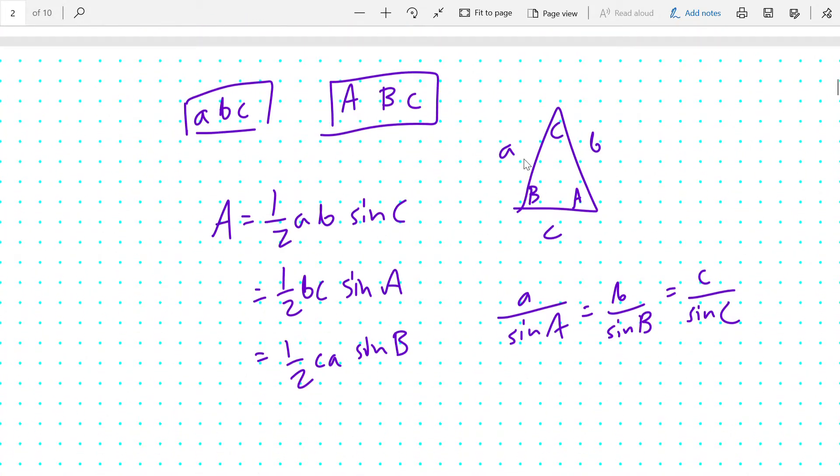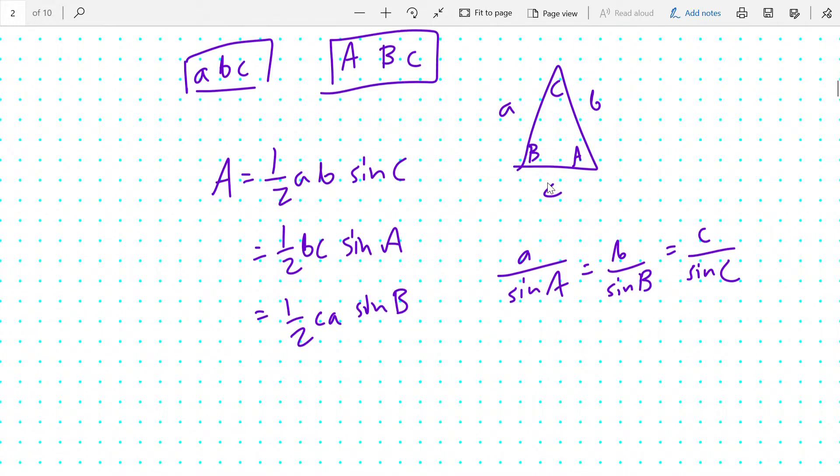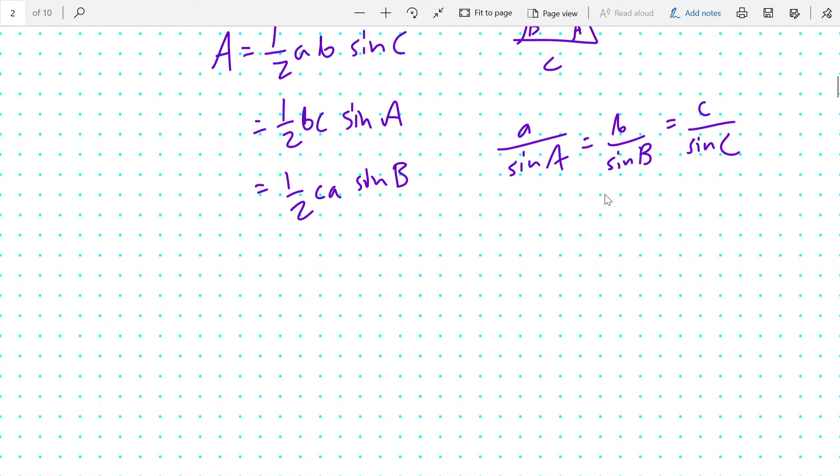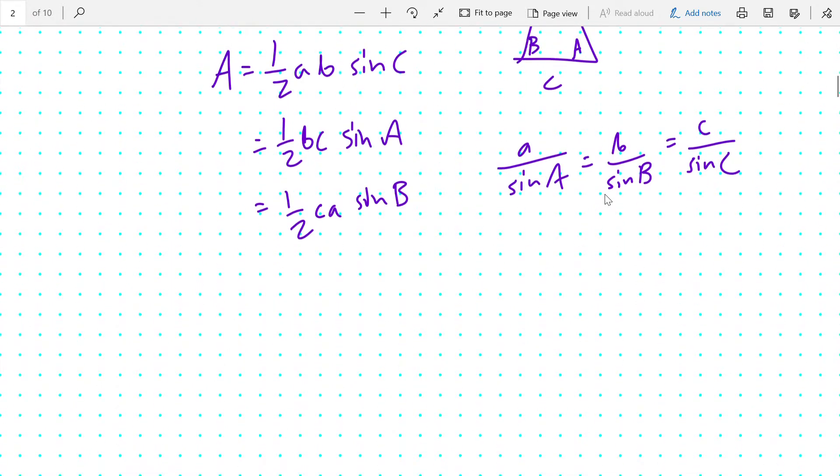This is when you have a set of an angle and a side that are opposite from each other, and you also have an angle or a side here, and you want to find out extra information about the triangle. You can also take the reciprocal of everything, so that sin A / a = sin B / b = sin C / c.